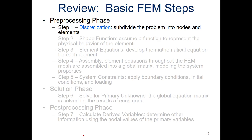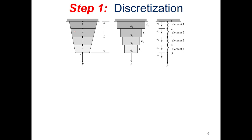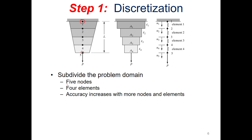The first step of the finite element method is discretization — we need to subdivide the problem into nodes and elements. Here's our bar of variable cross-section, discretized into five nodes. Node one is at the wall connection, and then nodes two, three, four, and five going down to the tip. The number of nodes is somewhat arbitrary — you'll get more experience about what's appropriate as we go through this course.